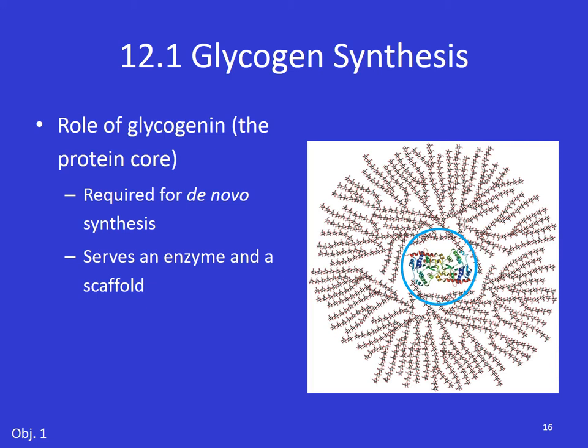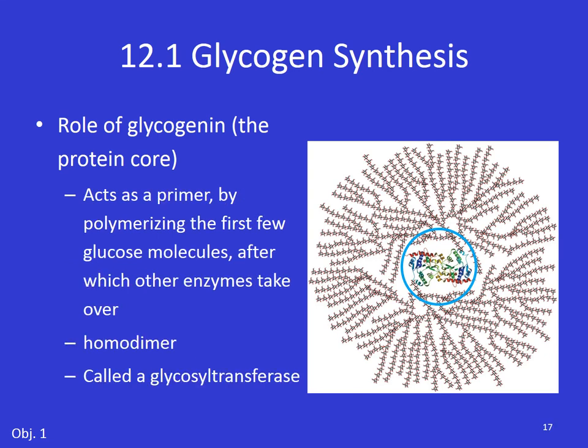Glycogenin is the protein core of glycogen and is required for de novo synthesis of glycogen — meaning making glycogen when you don't have any. This protein core serves both as an enzyme and as a scaffold. It acts as a primer by polymerizing the first few glucose molecules onto itself. If there's no glycogen, glycogenin can be used to make brand new glycogen. After the first few glucose molecules have attached to it, other enzymes take over. It's a homodimer and a glycosyl transferase.